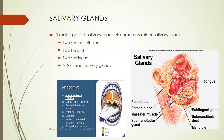The parotid gland is a paired gland present on both sides, situated posterior to the mandibular ramus and anterior and inferior to the external auditory canal. They are the largest salivary glands. The facial nerve and its branches pass through the parotid, making it a very complex structure and making surgery on the parotid gland difficult. The main duct is Stensen's duct, which empties into the buccal cavity lateral to the maxillary second molar. The duct opening is marked by the parotid papilla, which is clinically visible and sometimes misdiagnosed as a fibroma.